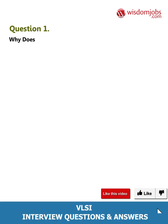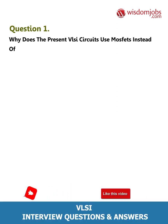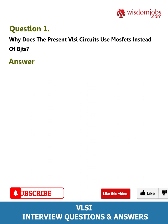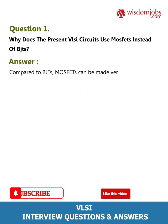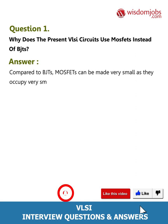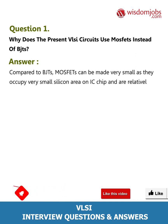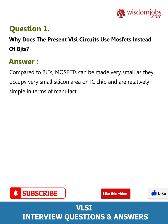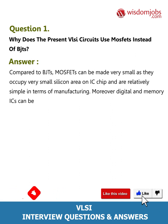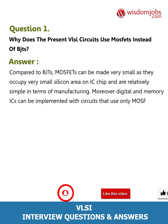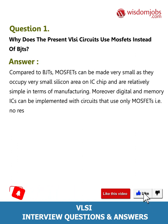Question 1: Why does the present VLSI circuit use MOSFETs instead of BJTs? Answer: Compared to BJTs, MOSFETs can be made very small as they occupy very small silicon area on an IC chip and are relatively simple in terms of manufacturing. Moreover, digital and memory ICs can be implemented with circuits that use only MOSFETs, i.e., no resistors, diodes, etc.